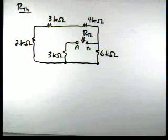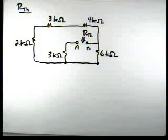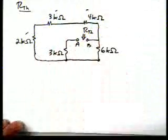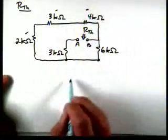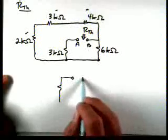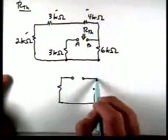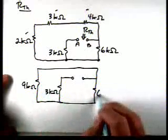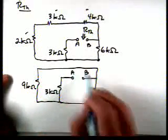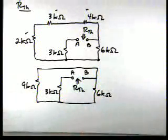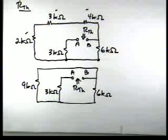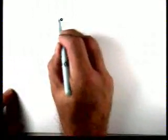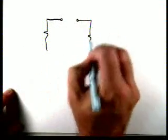Now we've replaced all those sources, here's our resulting network. Let's do some resistor combinations. Those three resistors are in series, so we can redraw the circuit with a 9 kilohm, 3 kilohms, and 6 kilohms, with terminals A and B and R_N. Looking at the connection between the 9 and the 6, they are in parallel, so we can redraw the circuit accordingly.